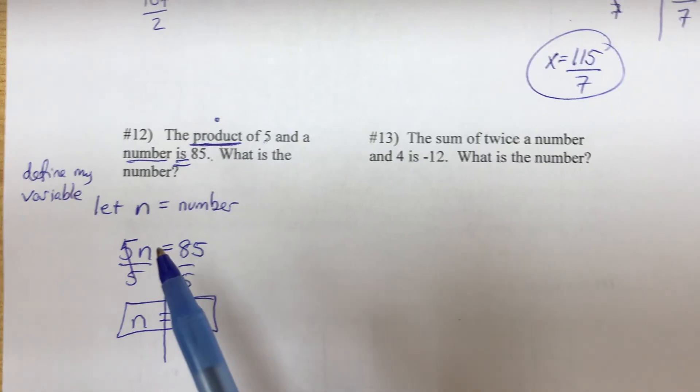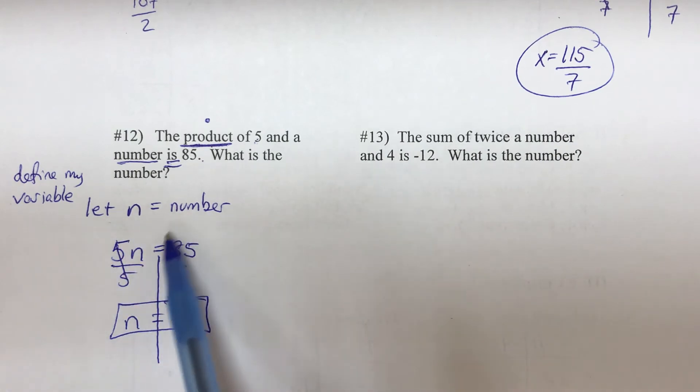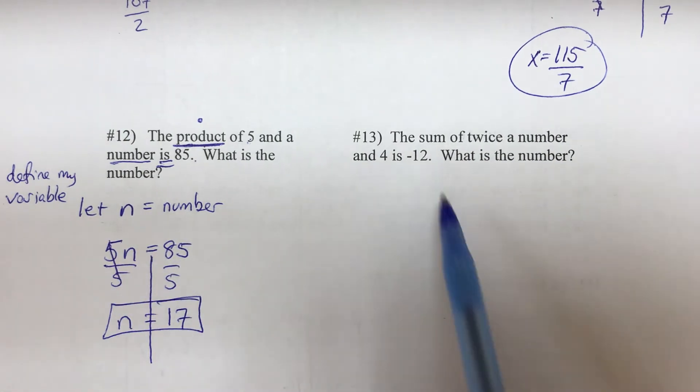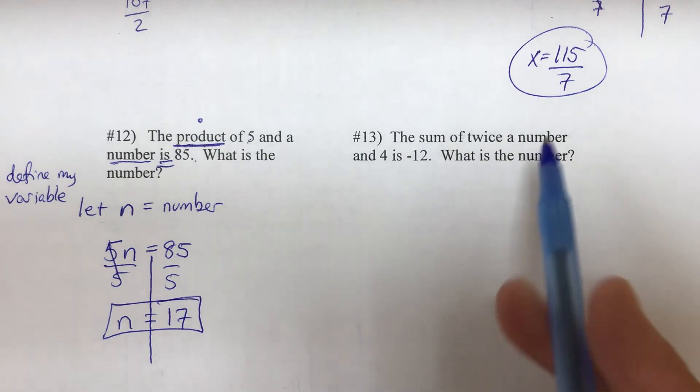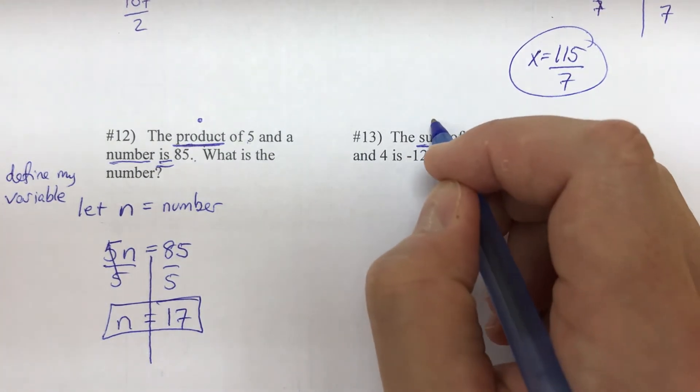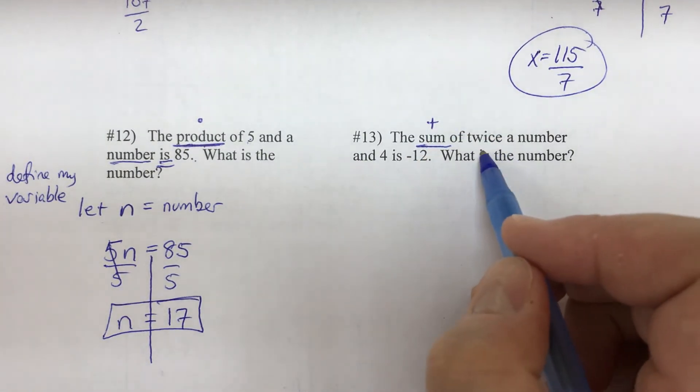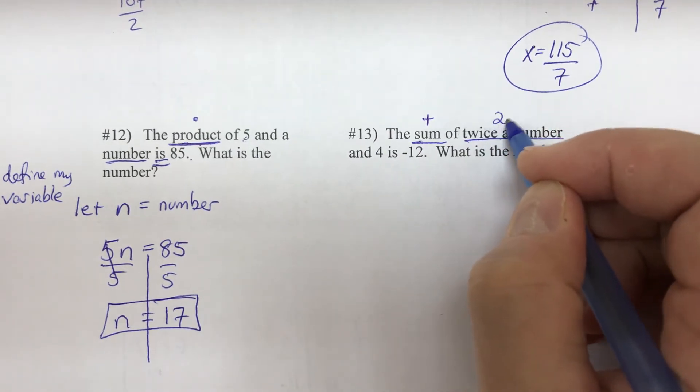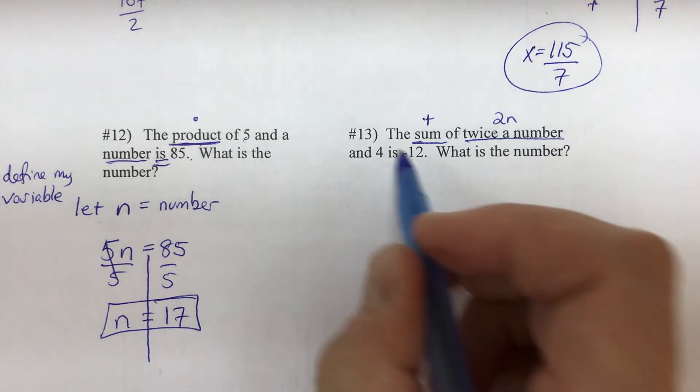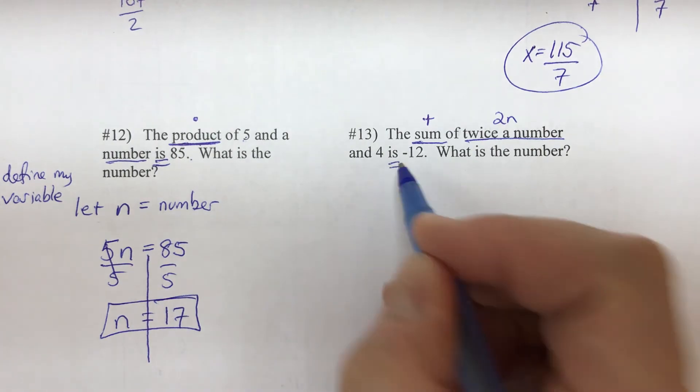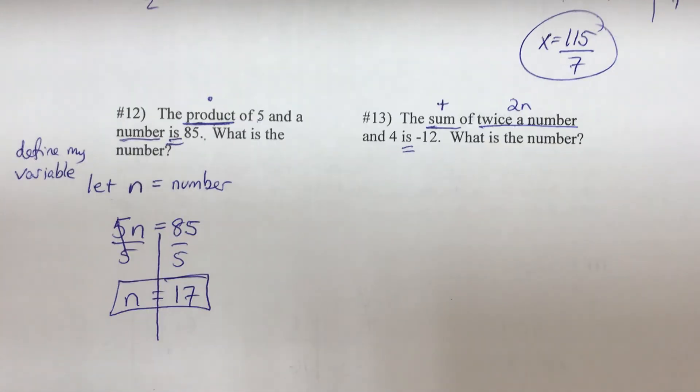Number 13: the sum - that means plus - of twice a number, of twice a number - that's 2 times n - and 4, is negative 12. So what is the number?